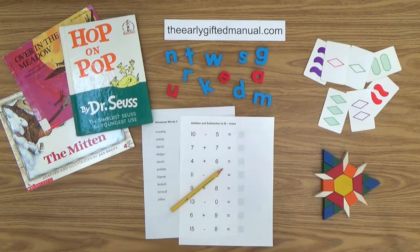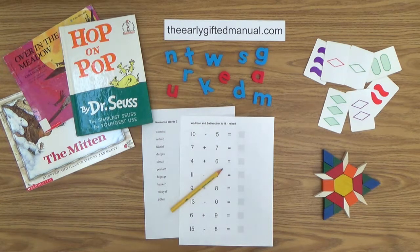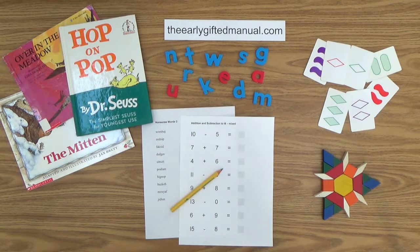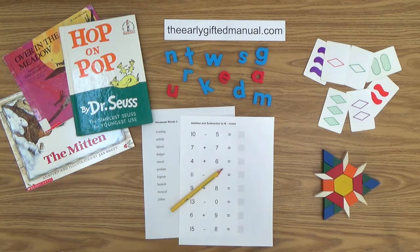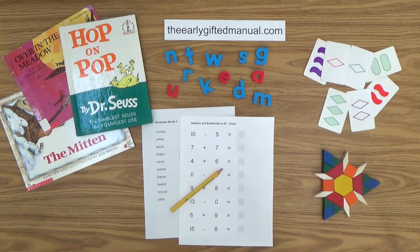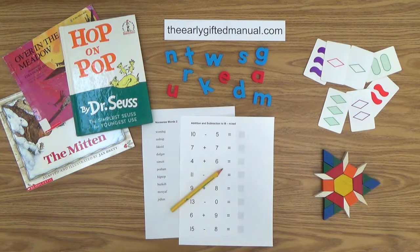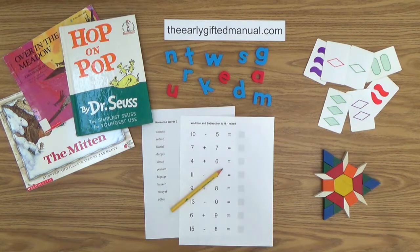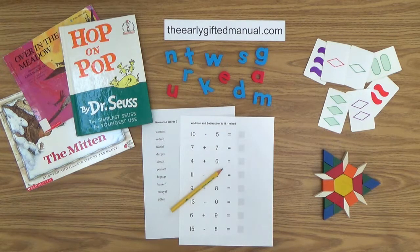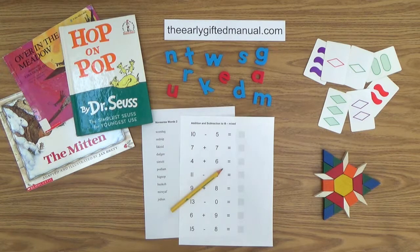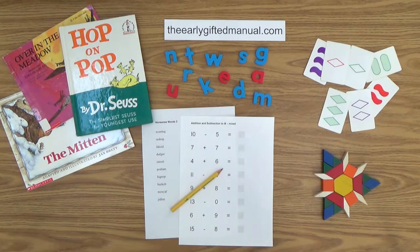As the video lessons are designed to work in conjunction with the program on my website, I ask you to, at some point, click on the URL link in the description box below and this action will take you to theearlygiftedmanual.com. By doing that, you will be able to put this lesson and all of the video lessons here on my channel in the proper context of the total program that I am presenting to you and your child.